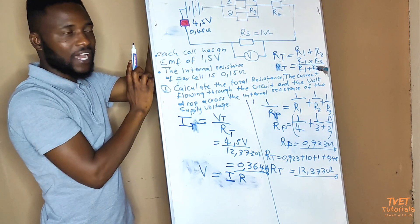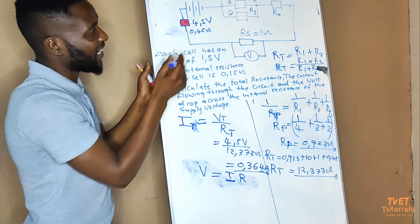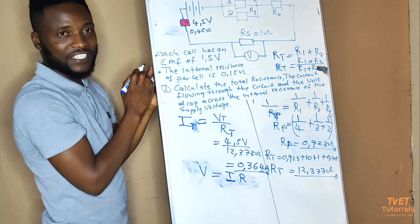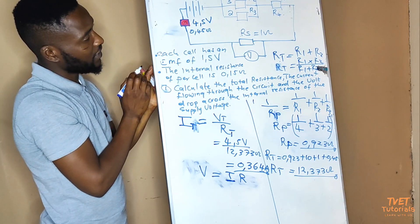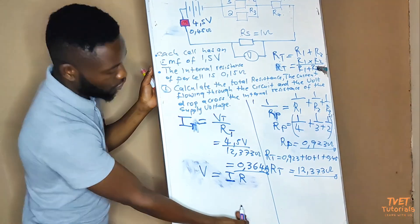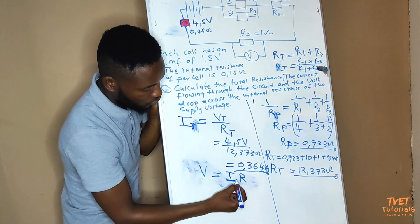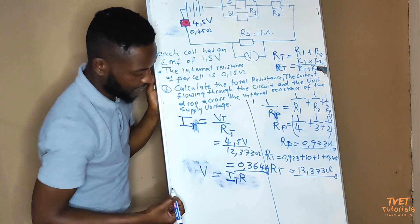So we know one thing now: the current that flows through the internal resistance is the total current, IT. So we can write IT